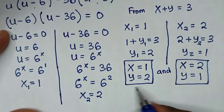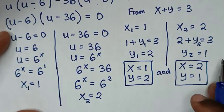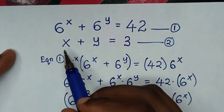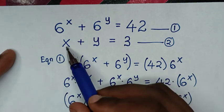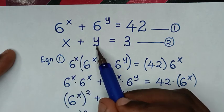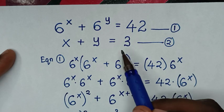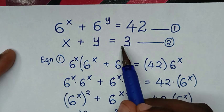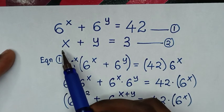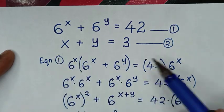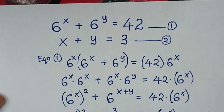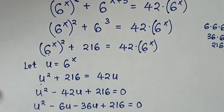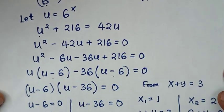To verify our answers: for the first solution, x equals 1 and y equals 2, so 1 plus 2 is 3. For the second solution, x equals 2 and y equals 1, so 2 plus 1 is 3. Both satisfy the second equation, which proves our answers are correct. Thank you for watching — don't forget to subscribe to my channel, and see you in the next video.